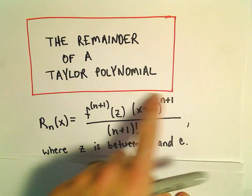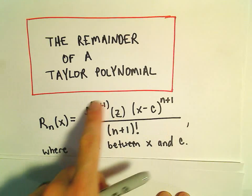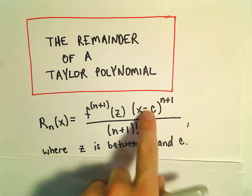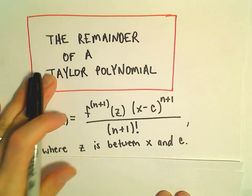All we're really going to have to do is just fill in this expression with the n plus first derivative at z, and then just plug in where we're centering it and calculate a few things. So let's look at an example here.